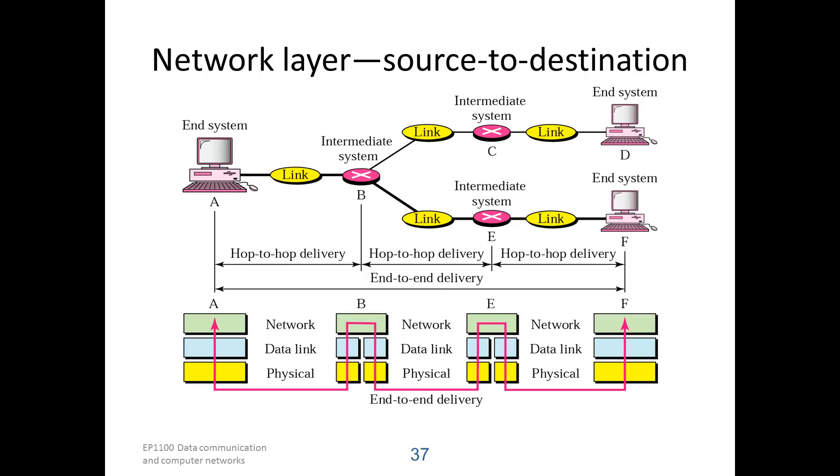The network layer relies on the hop-to-hop delivery of the data links, and it puts these links together into full connection from any computer to any other computer. When end system A sends data, it is received by B.